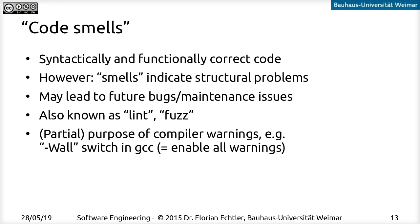Compilers often already catch specific types of these code smells. For example, if you turn on compiler warnings like in the C compiler GCC — the minus warn-all switch, -Wall for short — that will actually already catch quite a number of code smells that may indicate problems and that aren't specifically bugs. The code will still compile, but the compiler will tell you about things that might be fishy and might cause problems in the future.